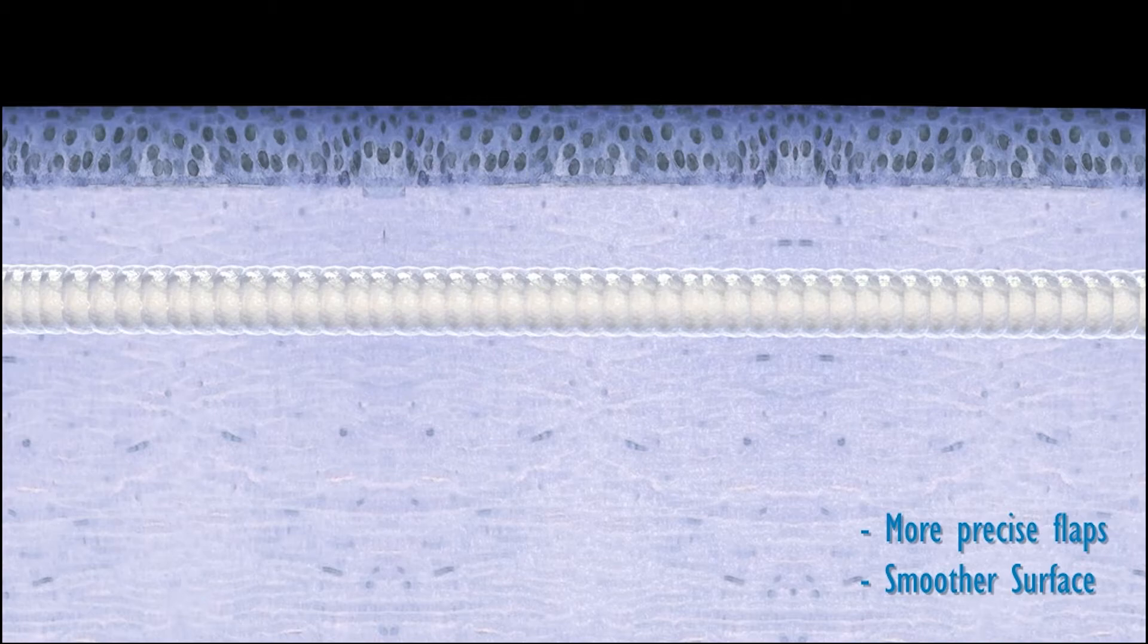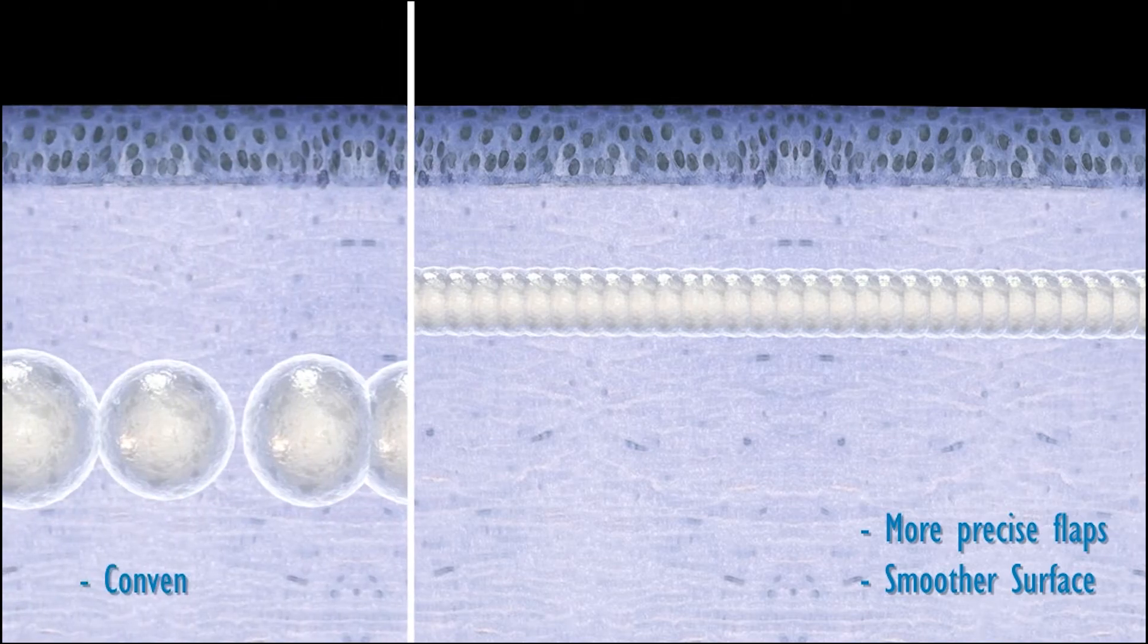With Z LASIK, these pulses are significantly smaller than in other LASIK methods with a high degree of overlapping. This ensures more precise flaps and a smoother surface.